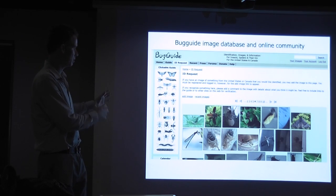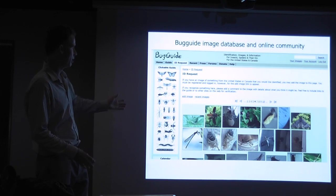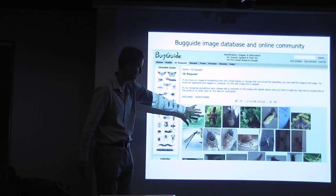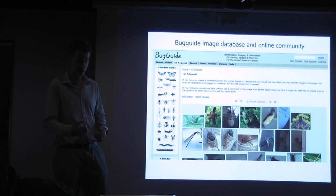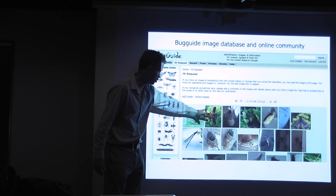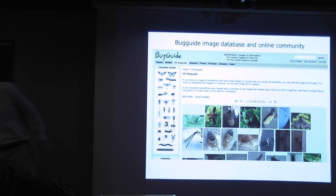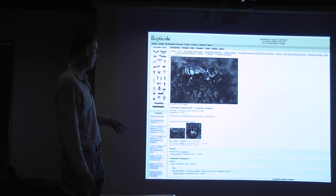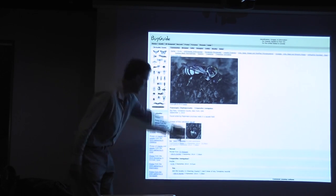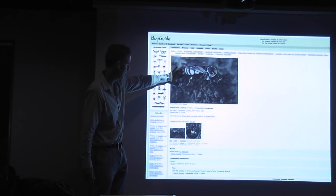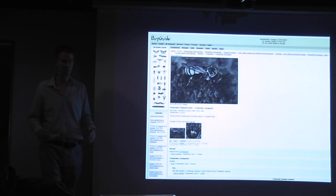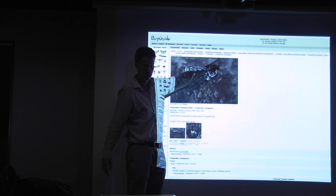Now moving into citizen science. Bug Guide is an image database and online community where people submit their images. On my phone, while I'm on the bus or whatever, I can virtually curate these images, tag them, and move them around. This morning I found an image in the ID request section. My assistant Hedel had made a tentative ID, I confirmed it, noted a problem with the locality, and just like that we've got a bee with a host association noted. We keep doing this thousands of times and gradually build up a huge database, which I can curate to the species level using my phone.